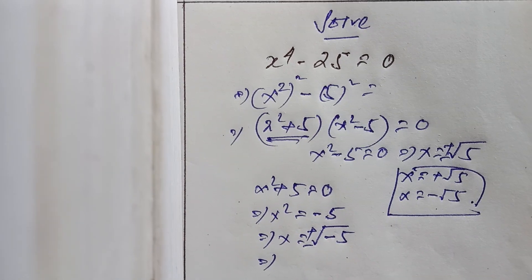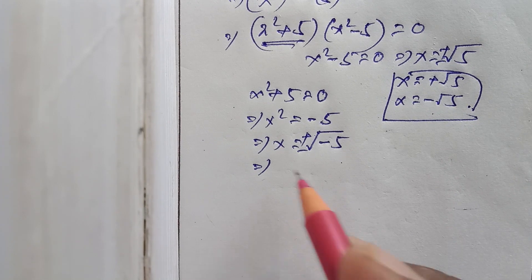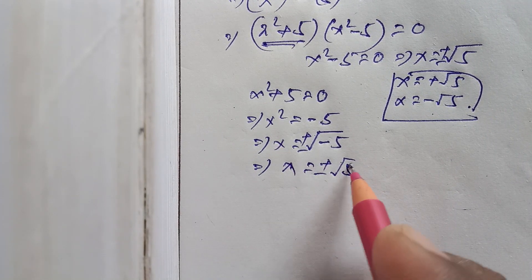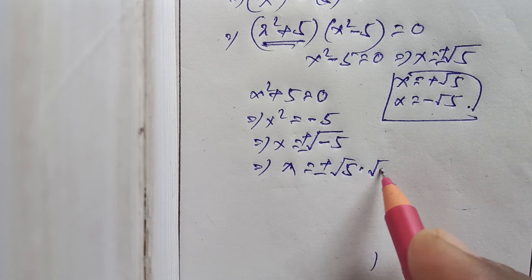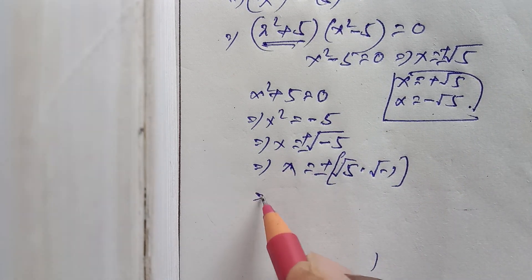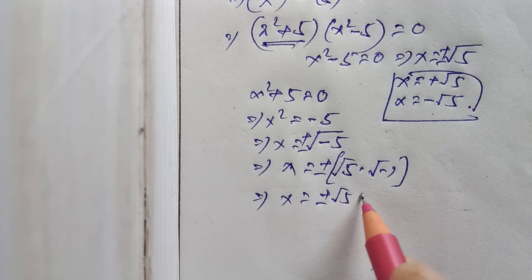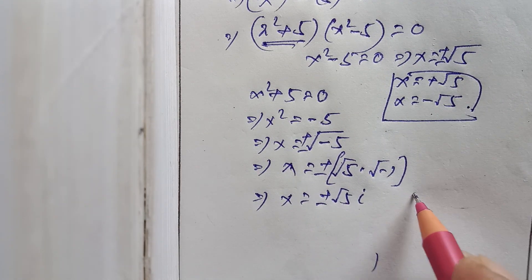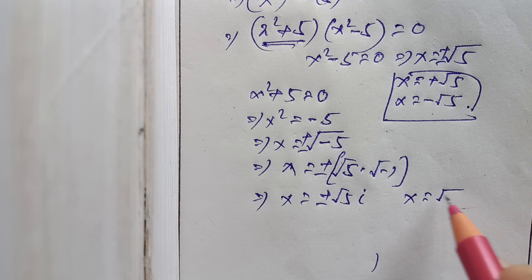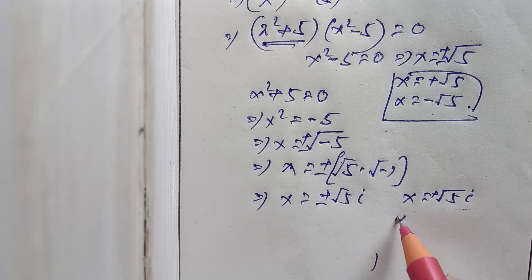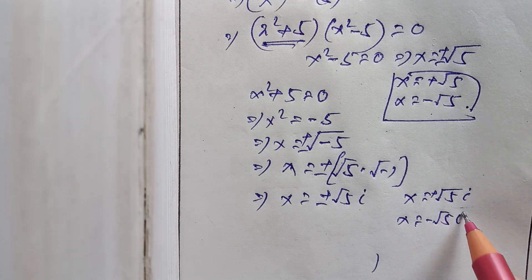So x equals plus minus root 5i. The other two roots are x equals plus root 5i, x equals minus root 5i.